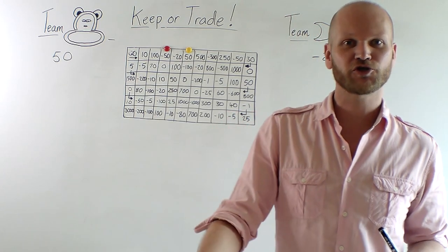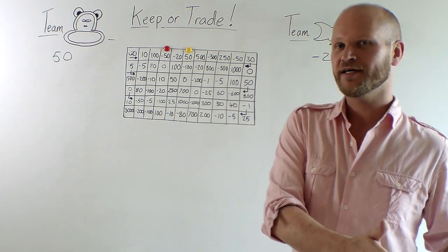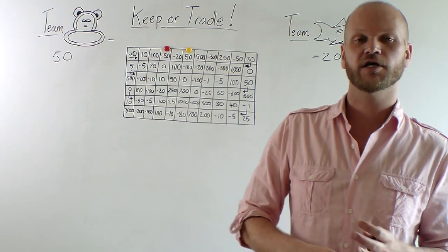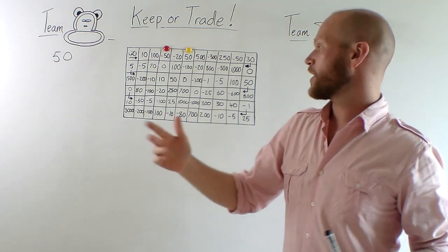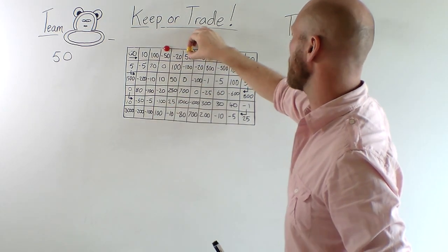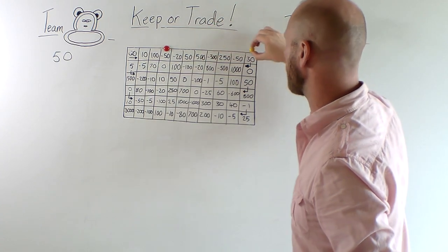You can explain to your students, even if they trade, it's not always a good thing. You're still taking a risk. You play again. Team Monkey throws a 5. 1, 2, 3, 4, 5.